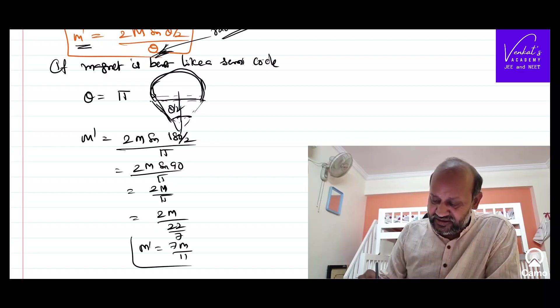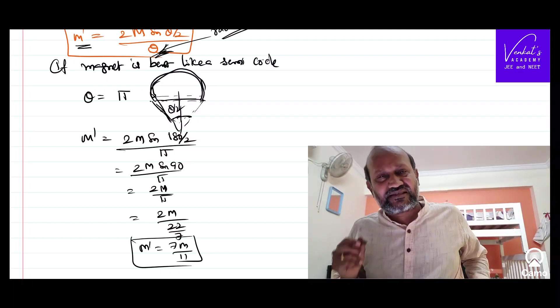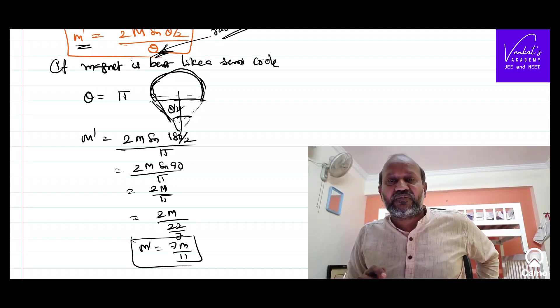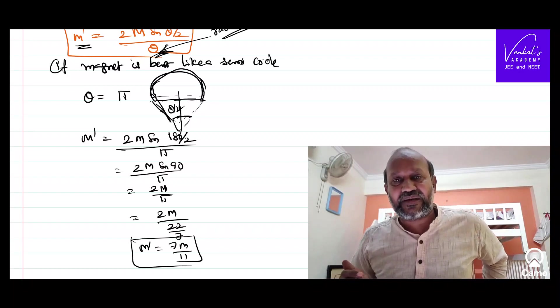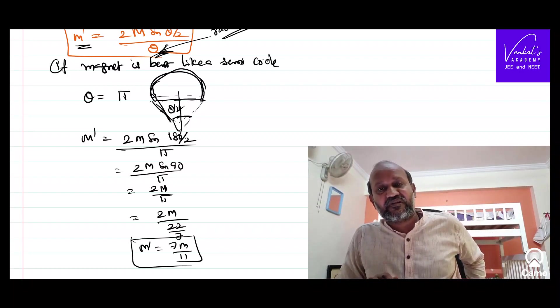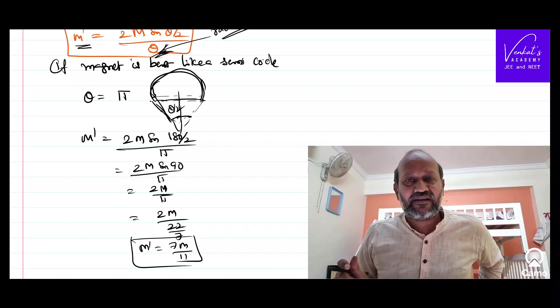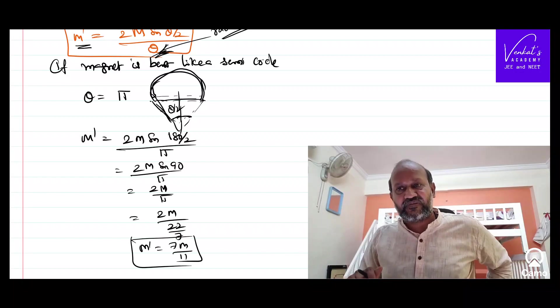This kind of questions were asked in late examination and IITGE so many times. It's a simple question that you just need to remember a concept that when you bend a magnet, the pole strength remains the same but the distance between the poles gets affected. We just need to find out how that is affected and solve the problem. Thank you for watching.